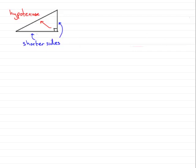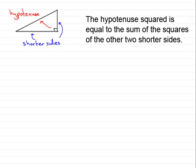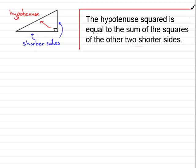What did Pythagoras discover? He discovered that the hypotenuse squared is equal to the sum of the squares of the other two shorter sides. This is a theorem or rule that you should learn, so make sure you learn this rule.